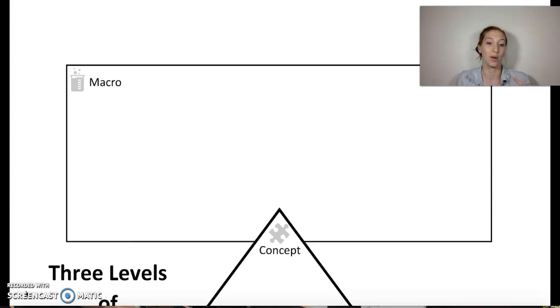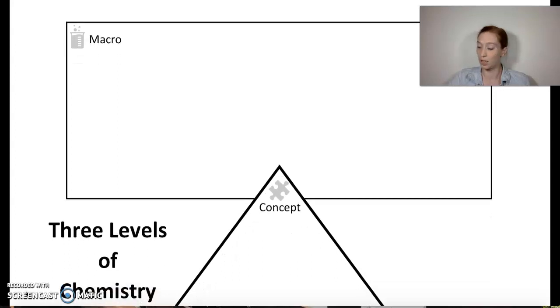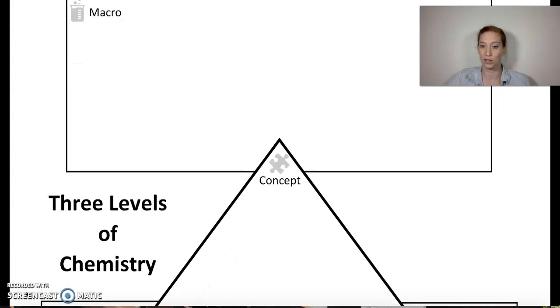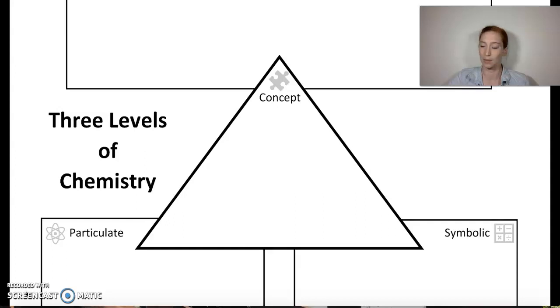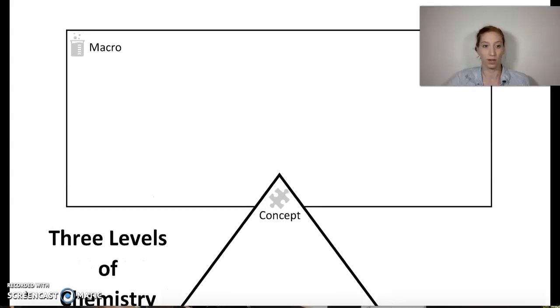Before we get into this, I want to talk about the format of this chart. You've got a whole book of them for the semester if you have a hard copy, otherwise you're using this digital copy like I have here. What you're going to notice is that there is a triangle in the center with our main concept, and then we have our three levels of chemistry. We're going to look at things at the macro level.